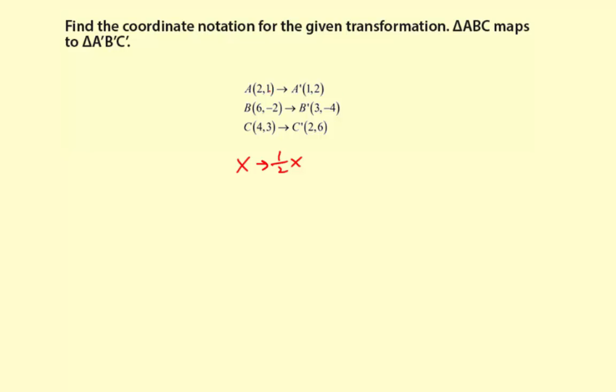Let's look at the Y values. Negative 2 to negative 4 and 3 to 6, well, those are doubling. So maybe 1 to 2, that's also doubling for the Y. So for A to A prime, B to B prime, C to C prime, notice the Y value is doubled each time. So that Y goes to 2Y.